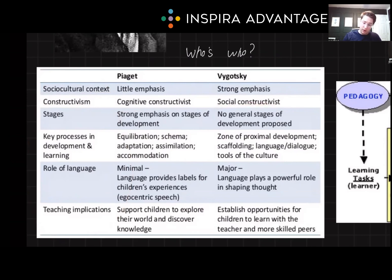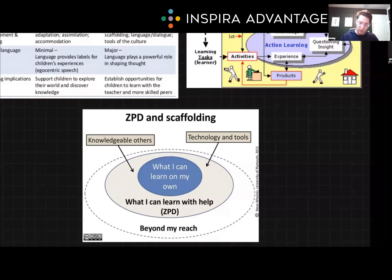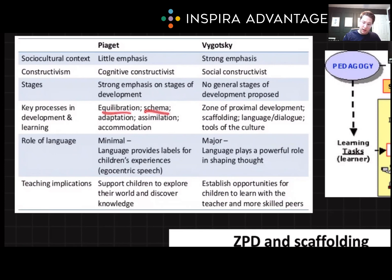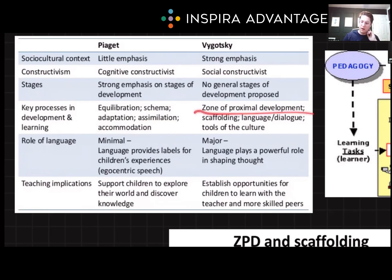Piaget is famous for his strong emphasis on developmental stages, where Vygotsky says we don't need to do stages — we're just going to have a zone of proximal development, which we will talk about shortly. Piaget thinks that equilibration, schema, adaptation, assimilation, and accommodation are all very important in the learning process, where Vygotsky focuses more on the zone of proximal development, scaffolding, language and dialogue interactions, and tools of the culture. We're only going to talk about the ones you actually need to know for the MCAT, but this gives you a broad overview of where the psychological theory is coming from.